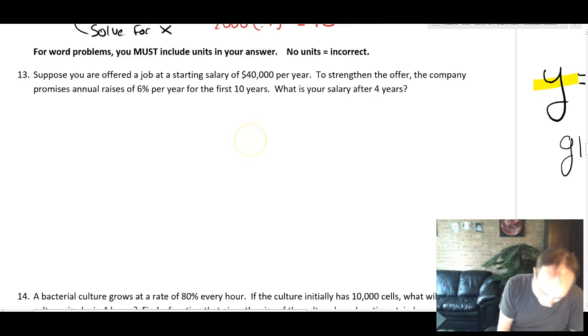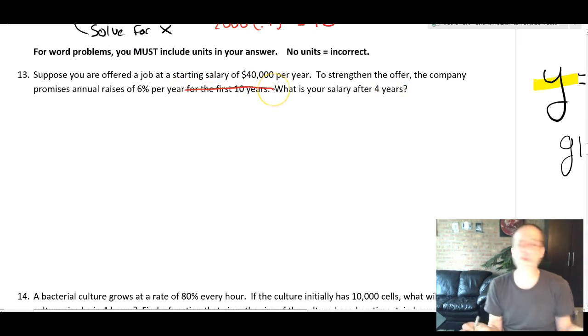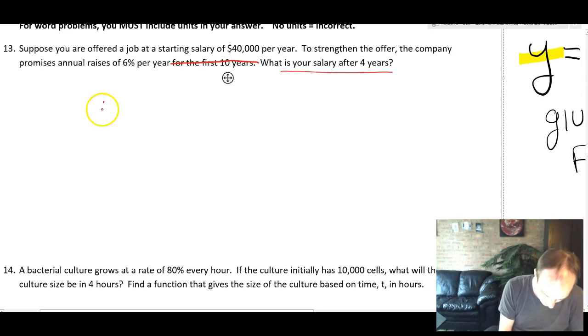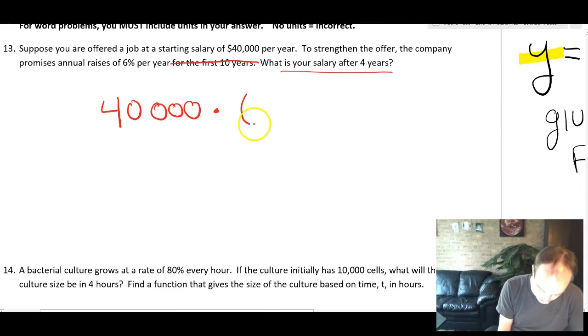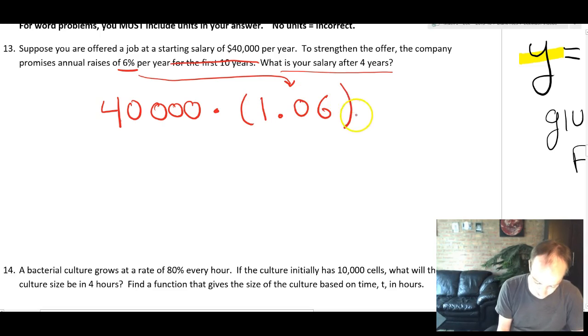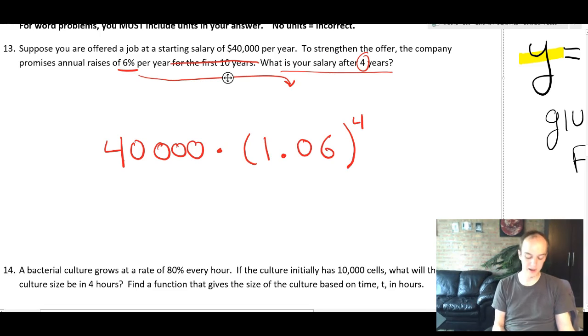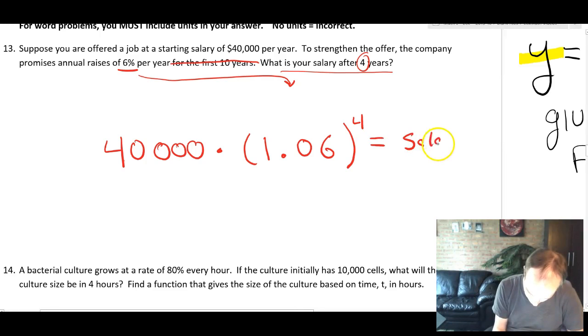So thinking about that, let's look at this problem. You're off to a job at a starting salary of 40,000 per year. The company promises you a raise of 6% per year for the first 10 years. What is your salary after four years? This thing about the first 10 years is completely unnecessary in the problem because they're asking about your salary after four years. So this sounds like it's asking you for the y value. So I think we just need to do 40,000 times. Now 6% is going to translate to a growth factor of 1.06. And then after four years, that's going to say, let's put that to the fourth.